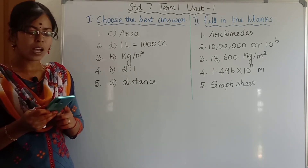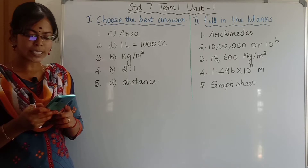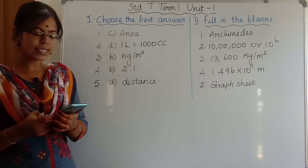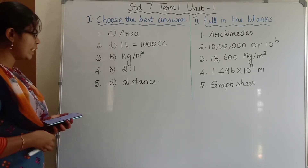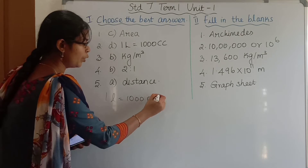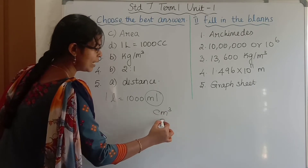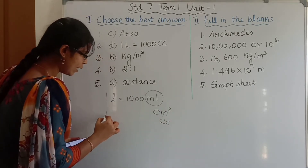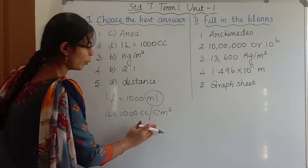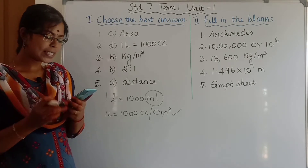Second question: which of the following is correct? Option A: 1L is equal to 1cc. Option B: 1L is equal to 10cc. Option C: 1L is equal to 100cc. Option D: 1L is equal to 1000cc. We know that 1L is equal to 1000ml. We should write it as centimetre cube. So 1L is equal to 1000cc or centimetre cube. The correct answer is Option D: 1L is equal to 1000cc.